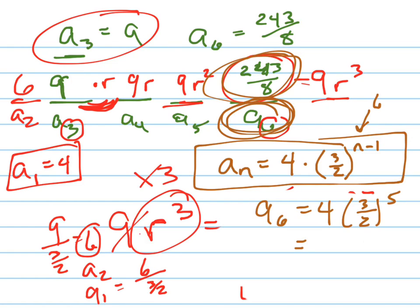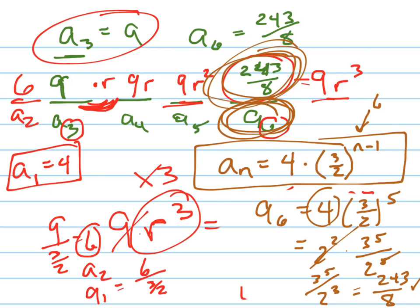So this is, notice 4 is just 2 squared, right? Times 3 to the 5th all over 2 to the 5th. What happens to these 2's? Two of the 2's cancel, so you get 3 to the 5th all over 2 cubed. 2 cubed is 8, 3 to the 5th is 243. Checks out, because that's what I got up here. Done.